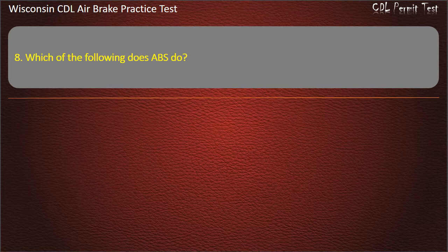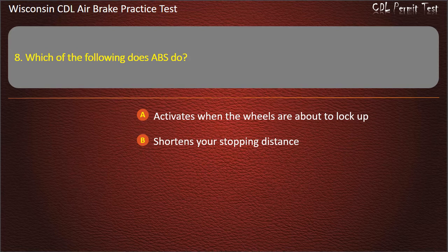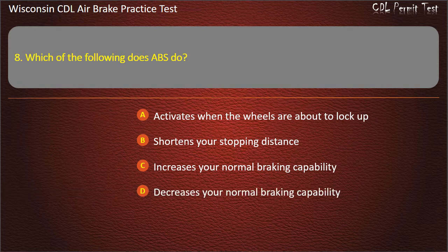Question 8. Which of the following does ABS do? Activates when the wheels are about to lock up. Shortens your stopping distance. Increases your normal braking capability. Decreases your normal braking capability. Answer: Activates when the wheels are about to lock up.